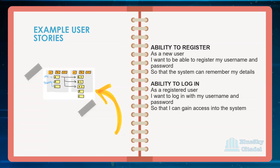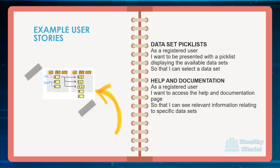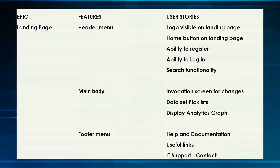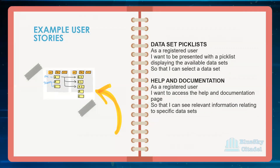You must follow the format: as a, I want to, so that. If you were to call two BAs and check user stories for the same functionality, they might actually be different, but at the end of the day if they've correctly captured the requirements, the two teams would develop the same thing. Choice of language doesn't matter much. One of the other user stories was the dataset picklist. A picklist is a dropdown tool. As a registered user, I want to be presented with a picklist displaying the available datasets so that I can select a dataset.